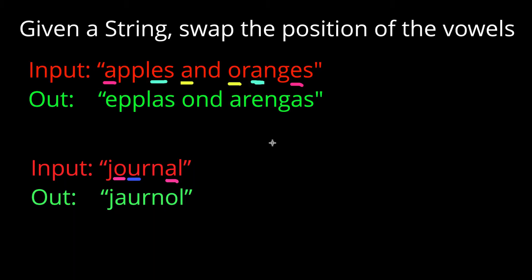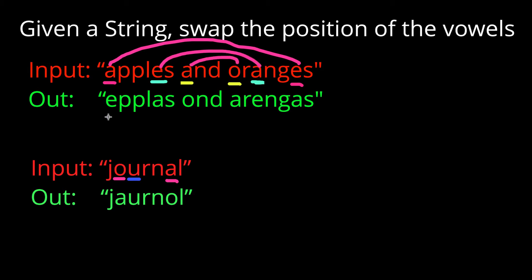The question is: given a string, swap the position of all the vowels. As you can see here we have two examples. In the first example we have the string 'apples and oranges'. What we do is swap the leftmost vowel with the rightmost vowel and keep moving inwards until we've swapped all the vowels. Our output string in this case is 'eplas and arengas', which sounds like something from a different language, but that's pretty much the idea.